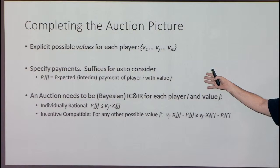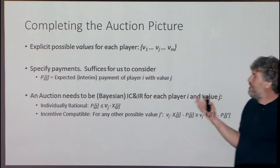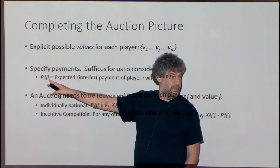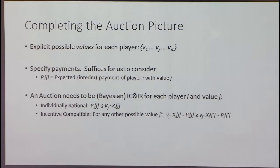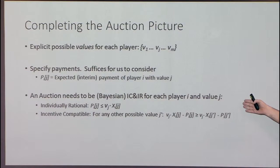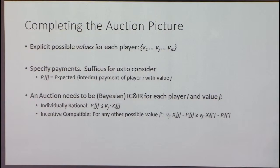With an auction, we also have to specify how much the players pay when they win — not just the probability of winning. We're going to be Bayesian, so we only worry about the expected payment. We have numbers P_ij: the expected payment of player i when his type is j. Then there are constraints that say this is really an auction — players don't want to deviate. The basic constraints are individual rationality (I'm not going to pay more than I gain) and incentive compatibility (I'm not going to deviate from the equilibrium). These constraints are linear in the variables X_ij and P_ij.